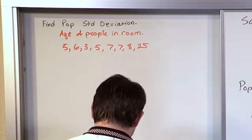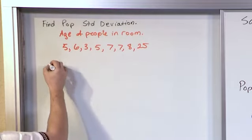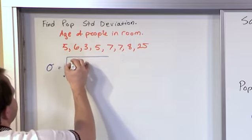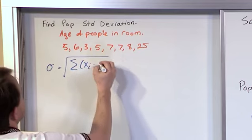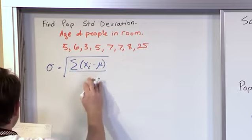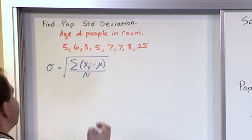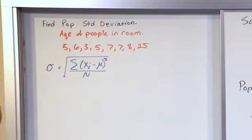What we want to do first is we want to write down what we're trying to find to remind ourselves. The standard deviation, right, is the square root of the sum of each individual data point minus the population mean, because we're talking about population, divided by n, right, which is the number of people in the population. And we have a square here because we have to square each difference like we always do.